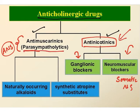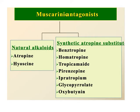Anti-nicotinics have both an ANS component and a somatic nervous system component. Anti-muscarinics include two kinds of drug classes: naturally occurring alkaloids and synthetic substitutes. Let us explore about them.